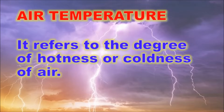One of those factors is air temperature, which refers to the degrees of hotness or coldness of air. Temperature on Earth averages 15 degrees Celsius at sea level. However, it varies according to the elevation, location of the place, and the time of the day.